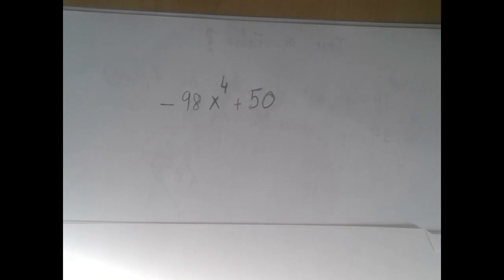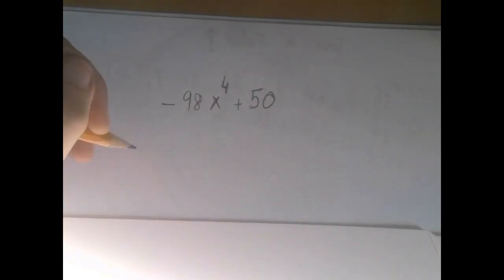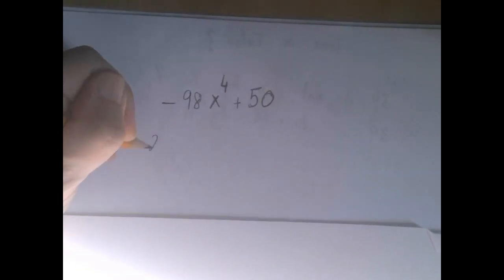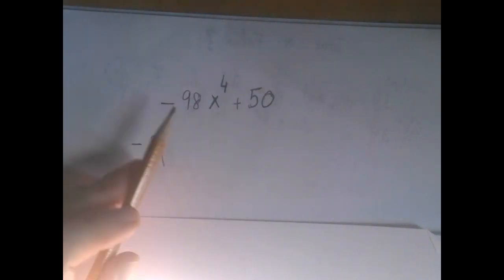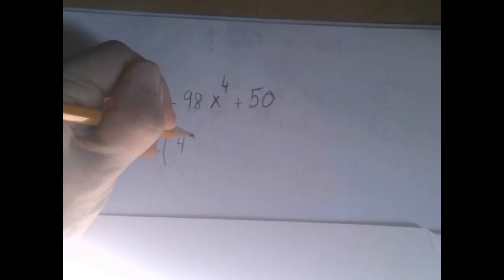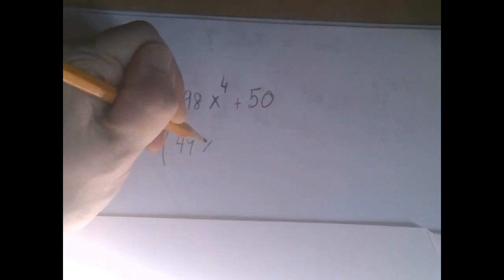But at this point, we have two options: either factor out the greatest common factor, which is 2, or factor out negative 2. And in this particular case, I would factor out negative 2, and here is why. If we factor out negative 2, then 98 divided by 2 is 49, and x to the fourth is there.